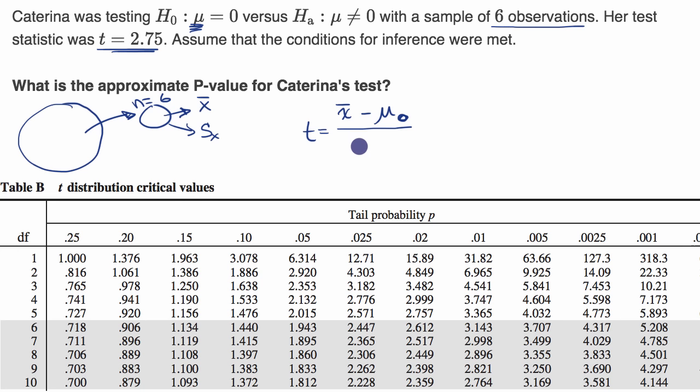I say estimate because unlike when we were dealing with proportions, where we can actually calculate the assumed sampling distribution standard deviation based on the null hypothesis, here we have to estimate it. So it's going to be our sample standard deviation divided by the square root of n.